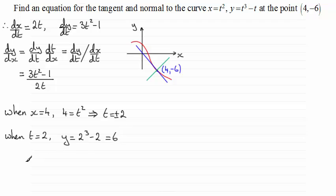Don't jump to the conclusion that it's going to be minus 2. You never know, you could have made a mistake up here. So do check this out. So when t equals minus 2, we've got y equals minus 2 all cubed minus minus 2. So we've got negative 8 plus 2, which is minus 6. So clearly we can see that therefore t must be equal to minus 2 at the point (4, -6).